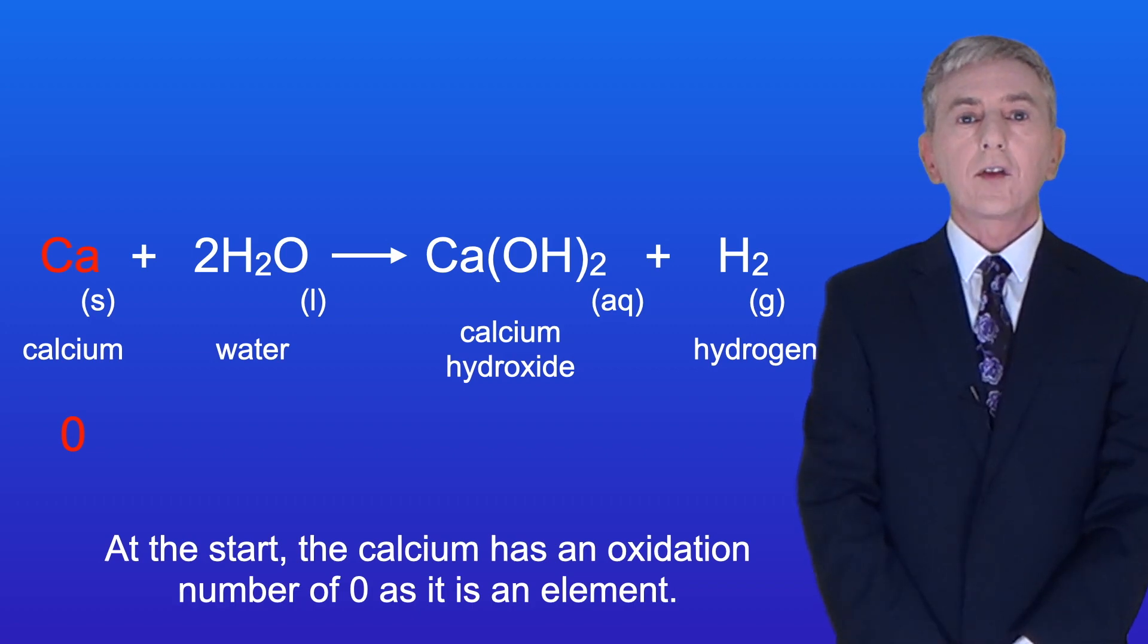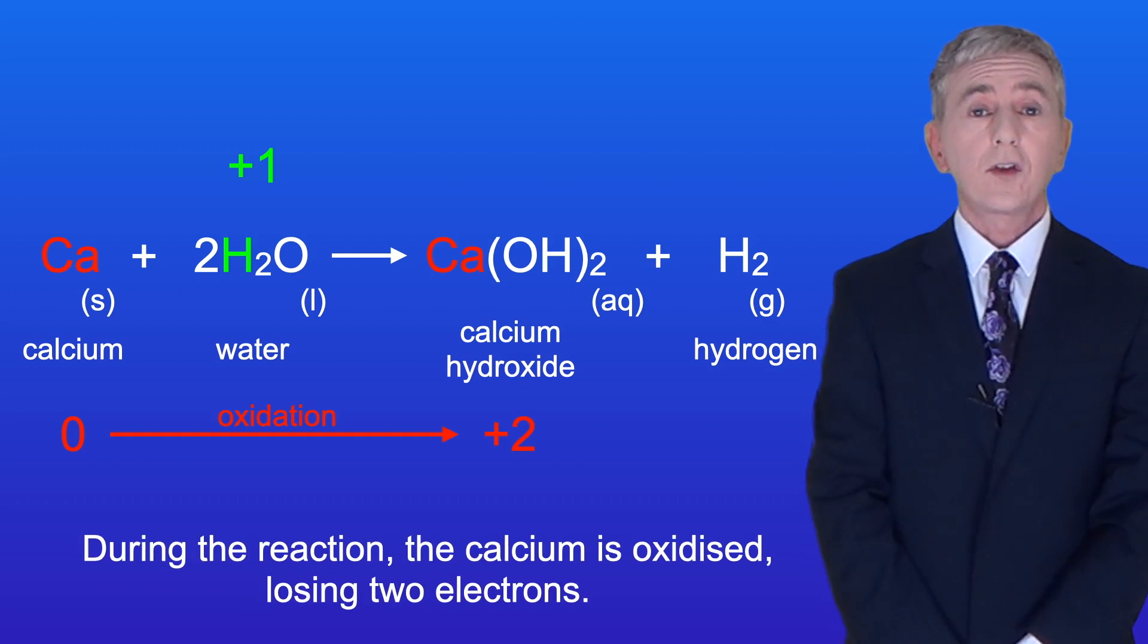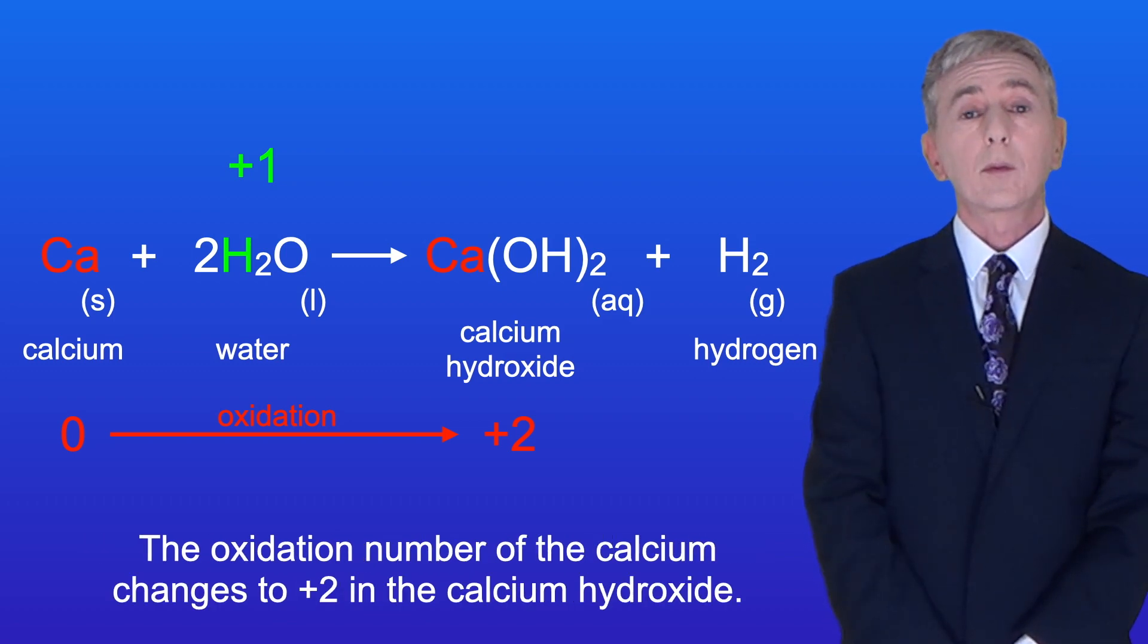At the start, the calcium has an oxidation number of zero as it's an element, and the hydrogens in the water each have an oxidation number of plus one. During the reaction, the calcium is oxidized, losing two electrons, and the oxidation number of the calcium changes to plus two in the calcium hydroxide.